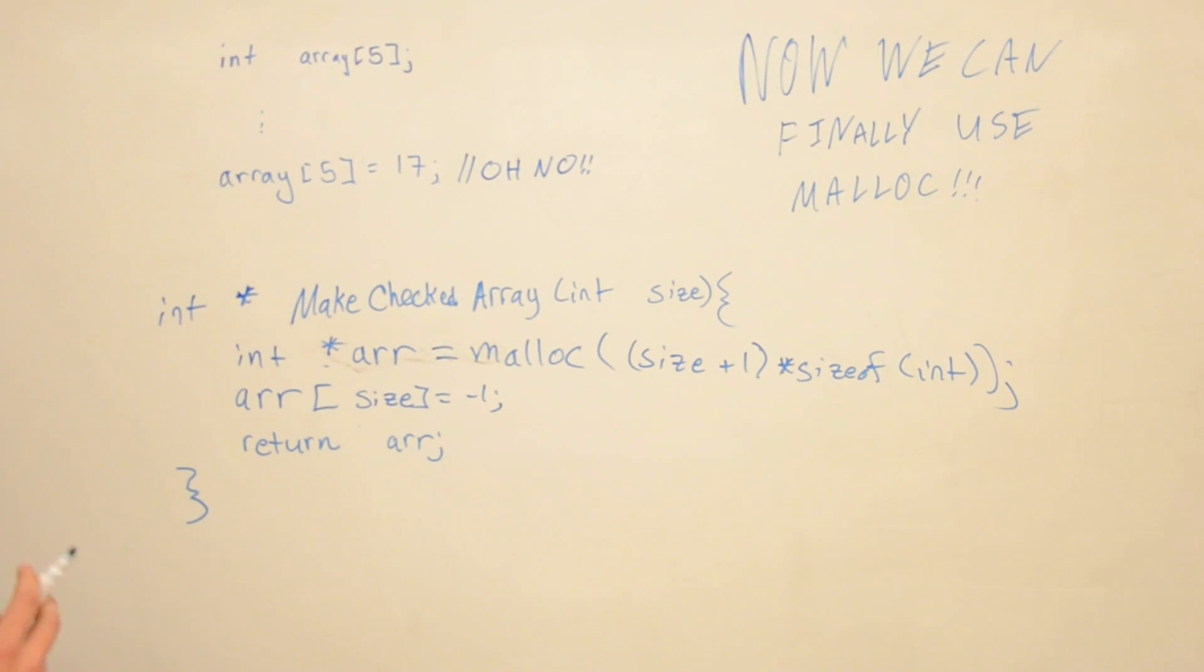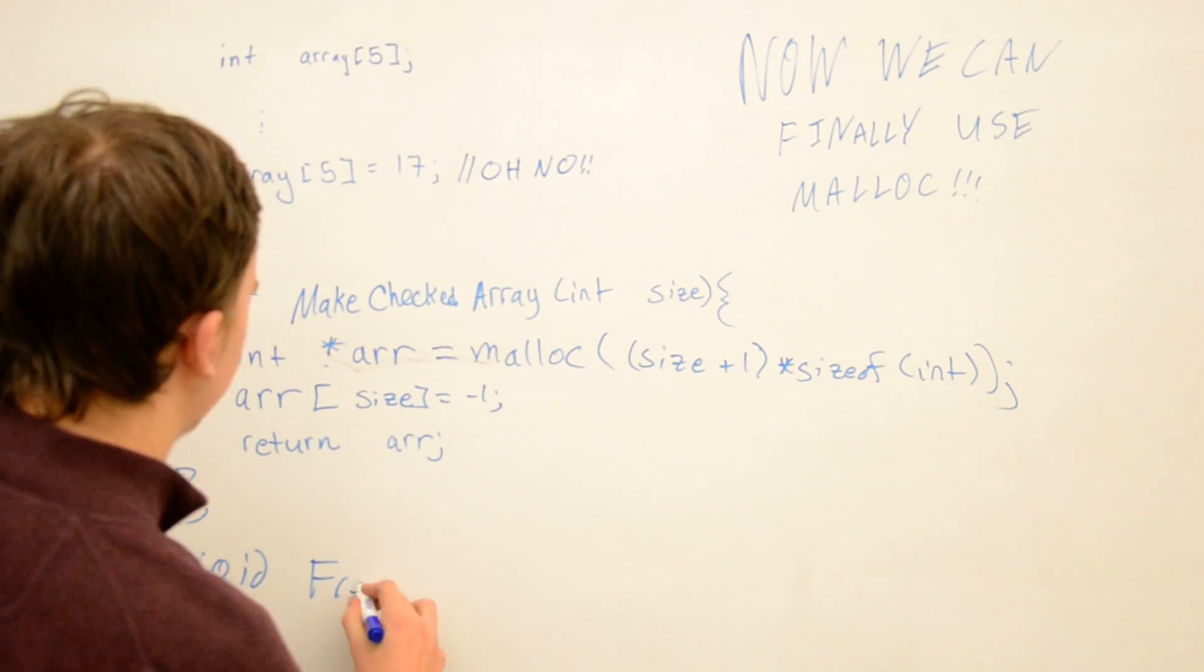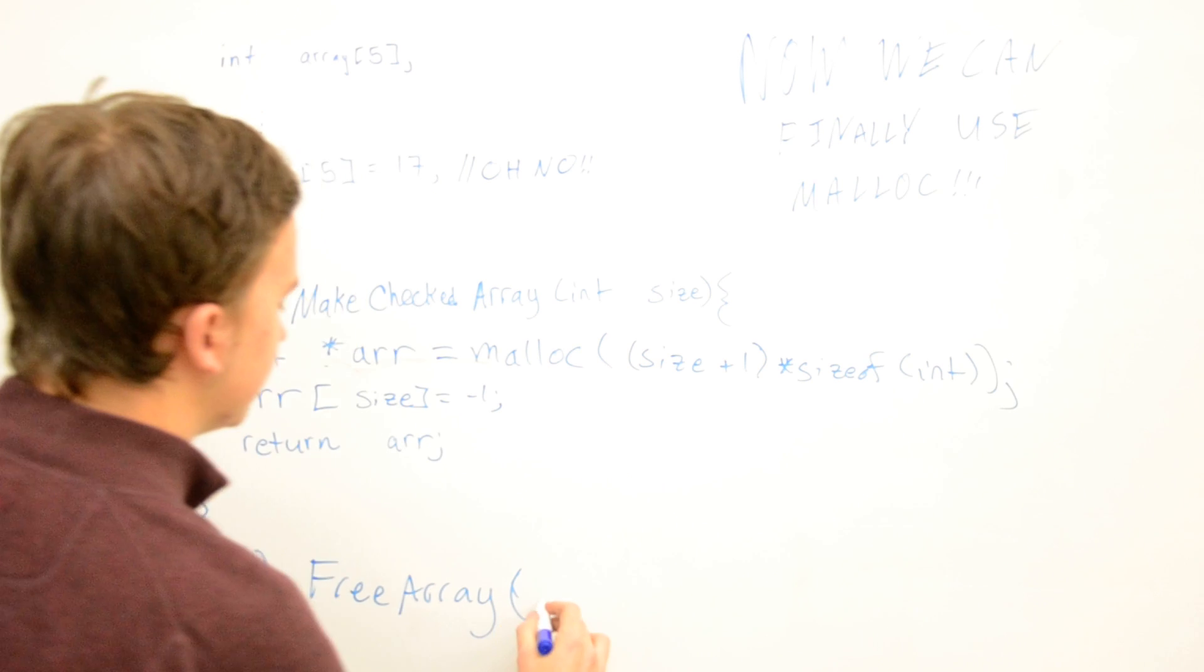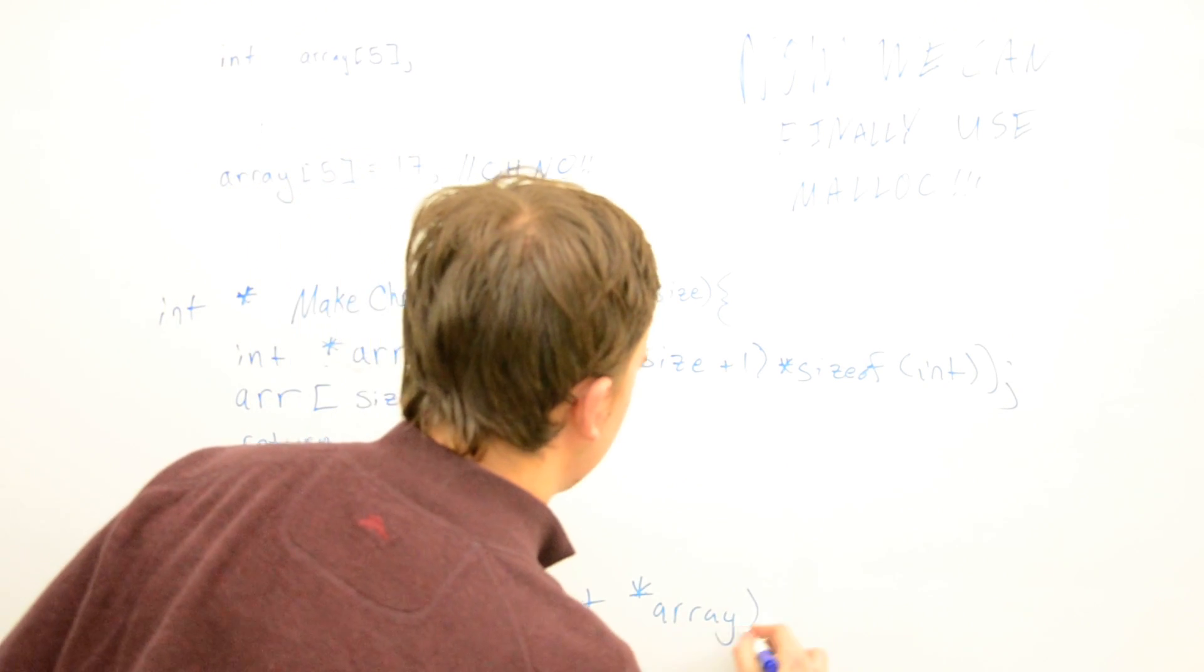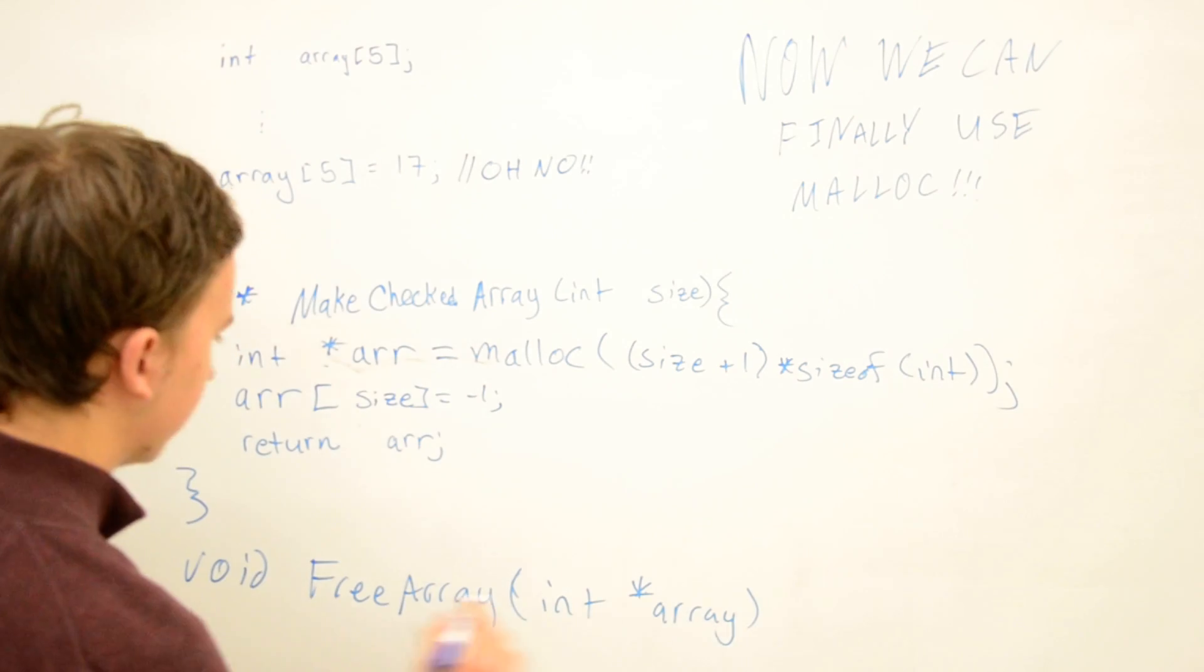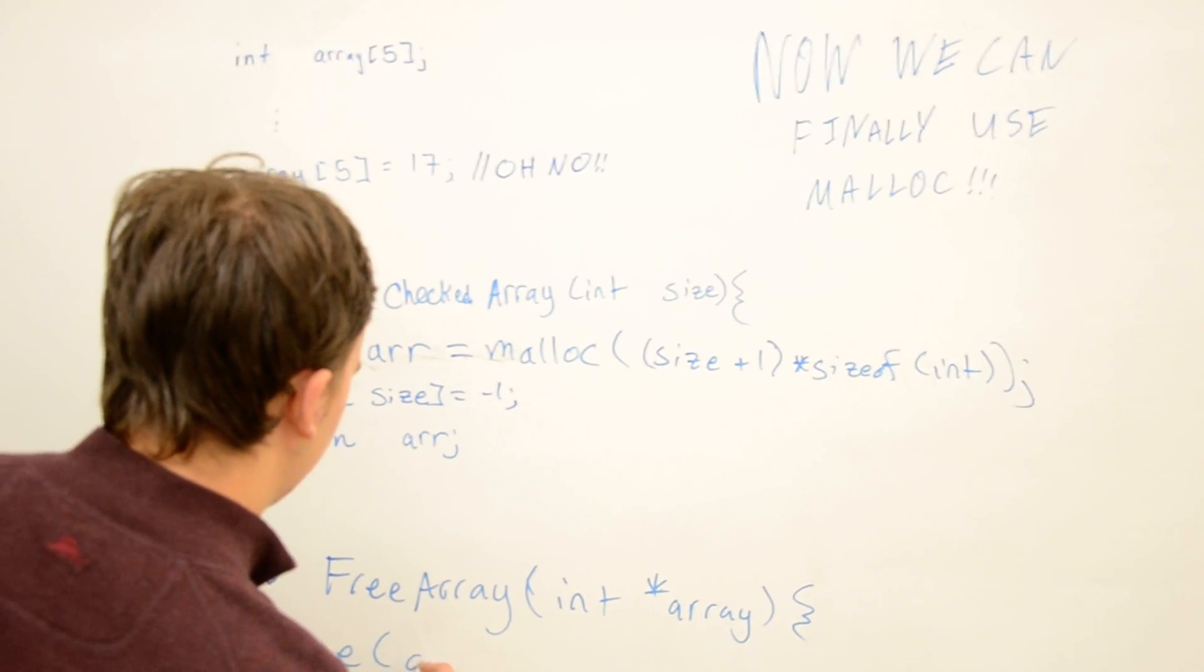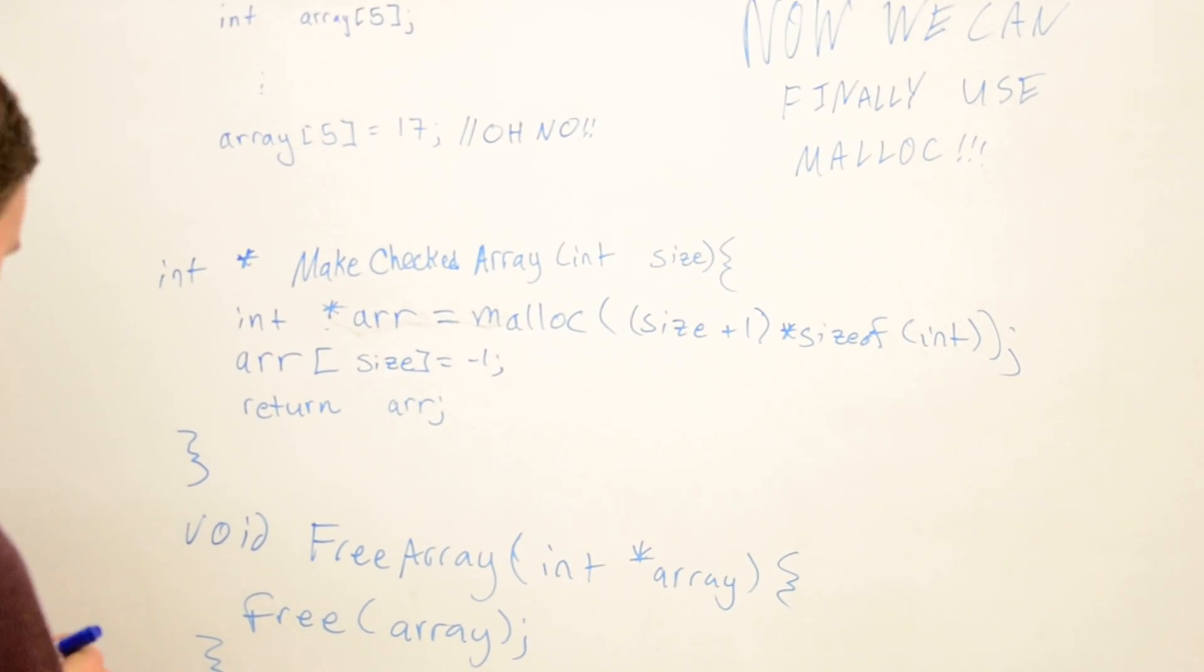But one thing that you do have to remember is that since you explicitly created this memory, you also have to explicitly free it. So we're going to use some sort of free_array function, pass in the array, and call the C library function called free.